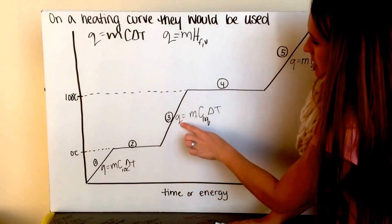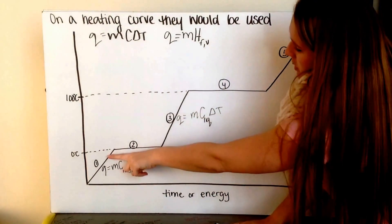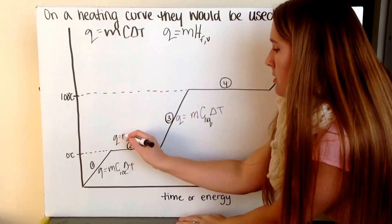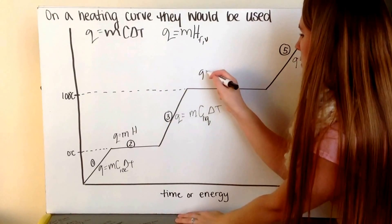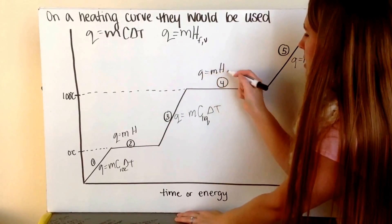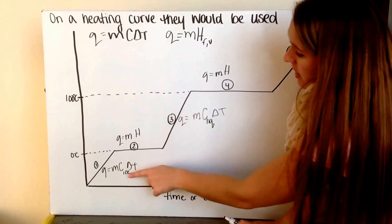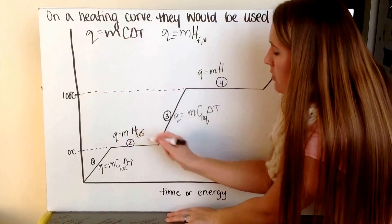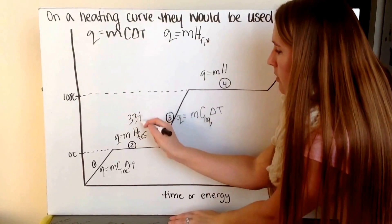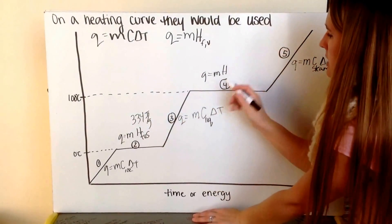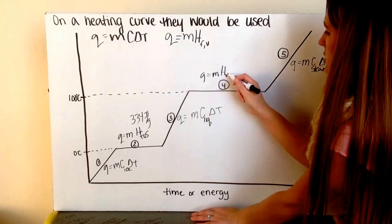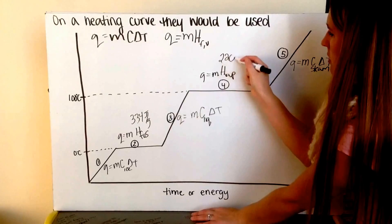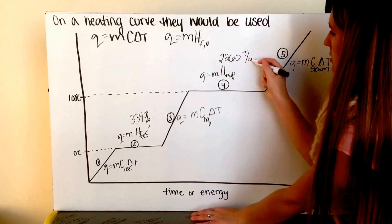When we are not increasing or decreasing in temperature and we are at our phase changes, we use Q equals M times H. The H value depends on the phase change: going from solid to liquid we use the heat of fusion — 334 joules per gram — and going from liquid to gas we use the heat of vaporization — 2,260 joules per gram.